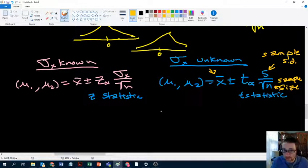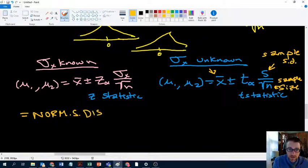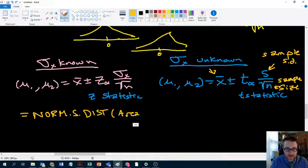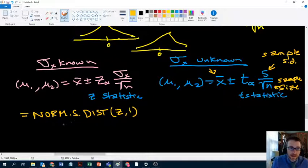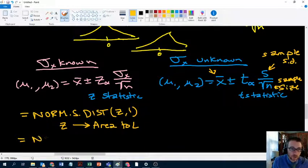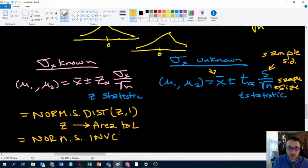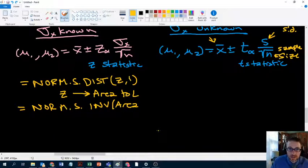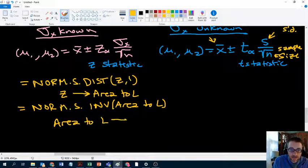Well, we're not going to do it by hand, we're going to do it just like we've done in the past with norm. Over here we learned two formulas, norm.s.dist. And then in here we put the area to the left, oh sorry, is that right? No, norm.s.dist, we put z, comma one, and that would take z and it would give us an area to the left. And then we had norm.s.inv, and then here we put the area to the left. All right, my spacing is not great. Area to the left. And then that takes an area to the left and it gives us a z.